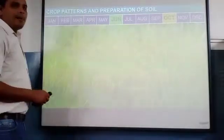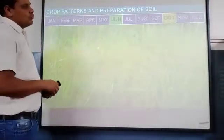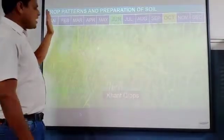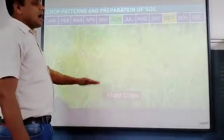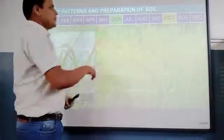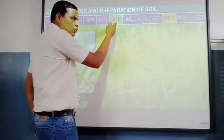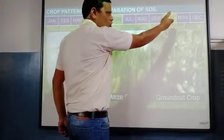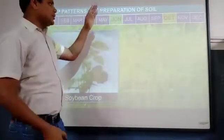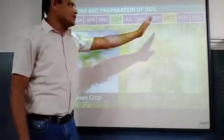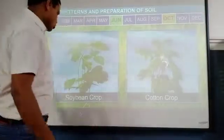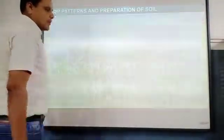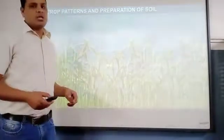Kharif crops are grown in the month of June and they are harvested in the month of October. That means you are growing in June and harvesting in October. Some examples are soybean crops and cotton crops.